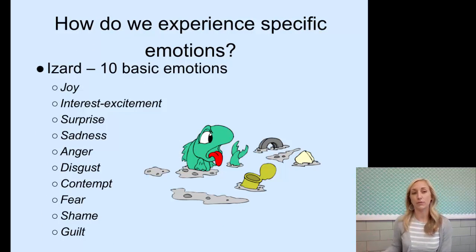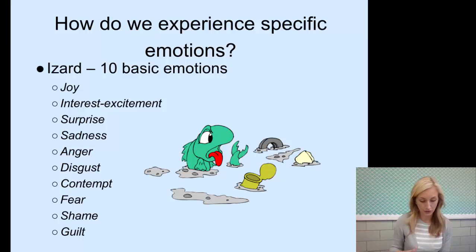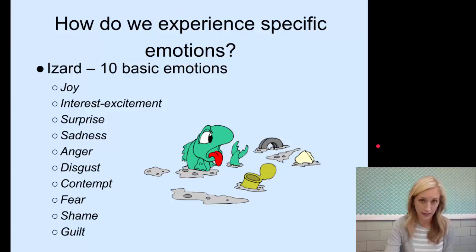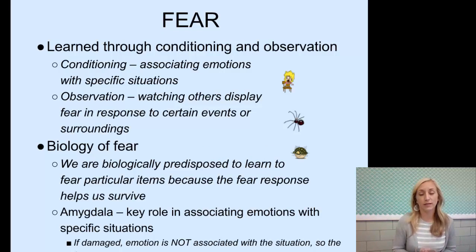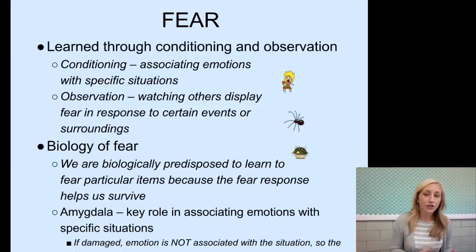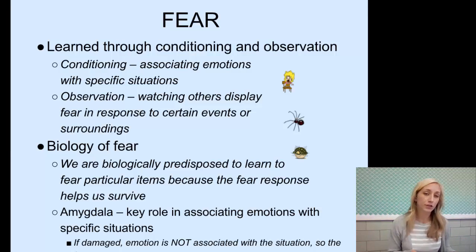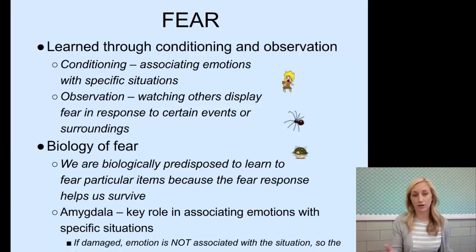Key hormones include serotonin, associated with depression; epinephrine, produced in fear; and norepinephrine, more abundant in anger. Izard identified ten basic emotions — joy, interest, excitement, surprise, sadness, anger, disgust, contempt, fear, shame, and guilt. Fear is learned through conditioning and observation: associating emotions with specific situations, like a spider bite conditioning you to fear spiders, or watching others display fear in response to a spider making you scared through observation.